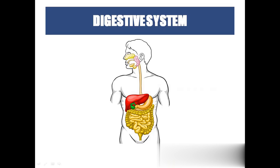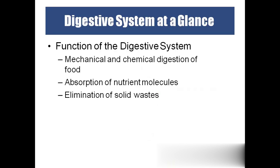From mouth to anus we call the passage the GIT, gastrointestinal tract. The salivary glands, liver, gallbladder, and pancreas are accessory digestive organs. The functions of the digestive system include converting complex food particles into simple absorbable ones, absorbing nutrients — carbohydrates, lipids, fats, vitamins, and minerals — into the blood, and eliminating undigested material as fecal matter.